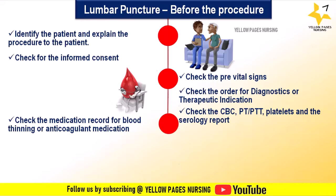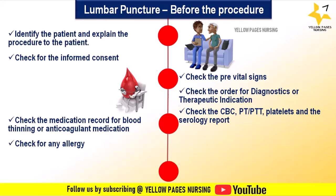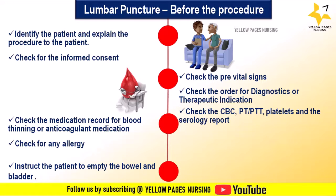Check CBC, PT, PTT, platelets, and serology reports. Check the medication record for blood-thinning or anticoagulant medications. Check for any allergies, such as to local anesthetics. Instruct the patient to empty the bowel and bladder to promote comfort during the procedure, then arrange the necessary articles.